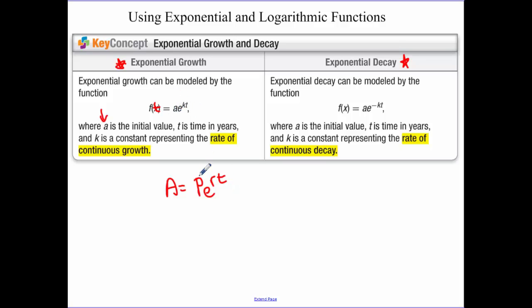You have your initial amount a, your initial amount p, e, your r is the rate it's growing. Last section it was a percentage that I gave you guys. We're going to have to be finding k in this section, and then t. So it's very similar to what we've already talked about.